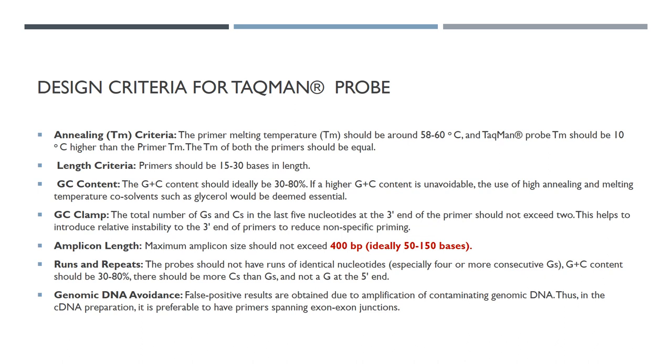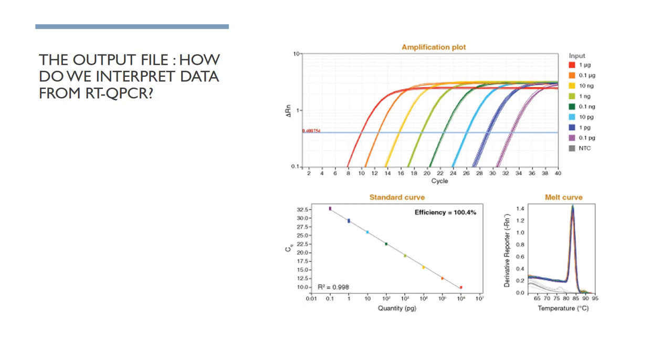We look at the Taqman probe itself. We have certain criteria, such as the annealing temperature, the length, the GC content, the GC clamp, the amplicon length, the runs and repeats, and genomic DNA avoidance. I will teach you how to design this probe in class when I expand on the discussion into the Taqman probe.